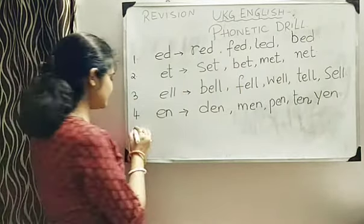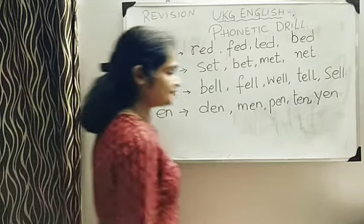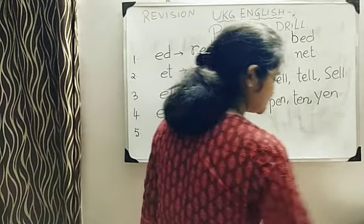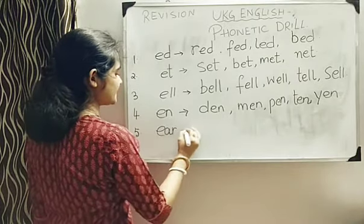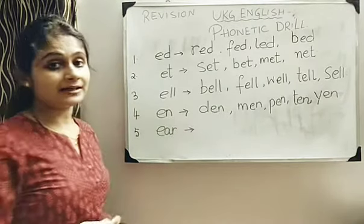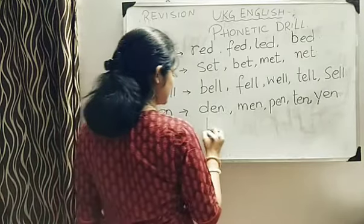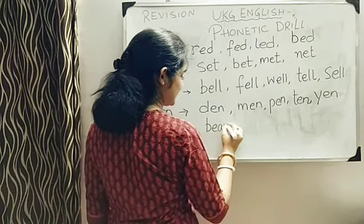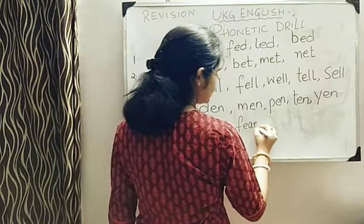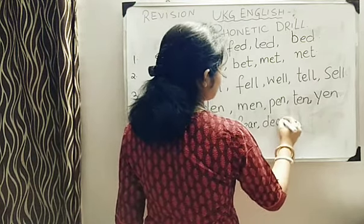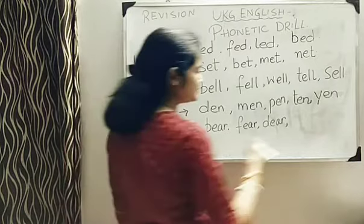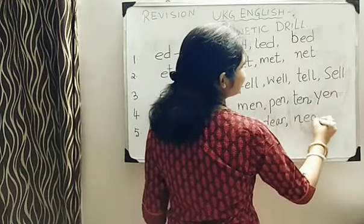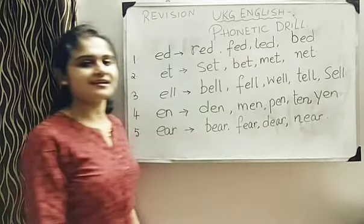And the last topic, number 5. Number 5, we will do E-A-R. Okay? So this is my ending part. I will add up one letter before that. Like bear, B-E-A-R. F-E-A-R, fear. D-E-A-R, dear. Somebody who is very near to you. And near also, another word. N-E-A-R, near. Okay?